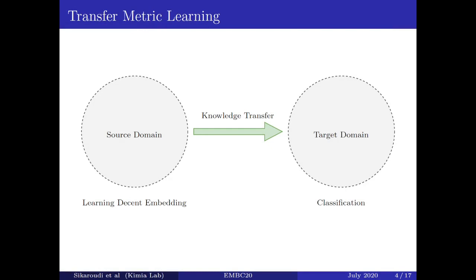Transfer metric learning is able to mitigate this limitation in the domain of interest, the target domain, by leveraging knowledge from other related domains, the source domains. In other words, we can learn a good embedding in the source domain, which is somehow similar to the target domain, and then do a task in the target domain, for example, a classification task.